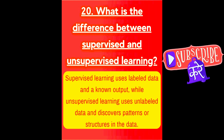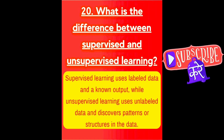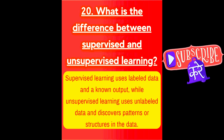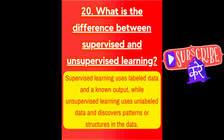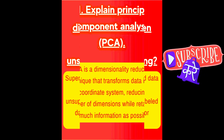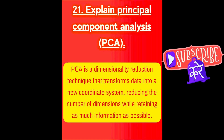Next question is, what is the difference between supervised learning and unsupervised learning? Supervised learning uses labeled data and a known output, while unsupervised learning uses unlabeled data and discovers patterns or structures in the data.